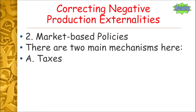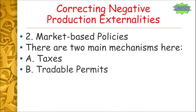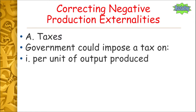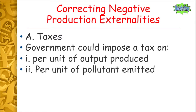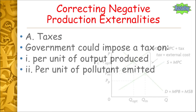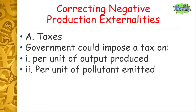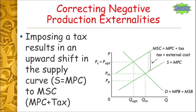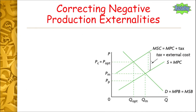Our second range of options is market-based policies, and there are two main ones: taxes and tradable permits. Taxes are something fairly familiar in day-to-day life. The government could impose a tax per unit of output produced or per unit of pollutant emitted — those are the two different approaches. In either situation it would result in an upward shift of the supply, or marginal private cost curve, towards the marginal social cost curve.